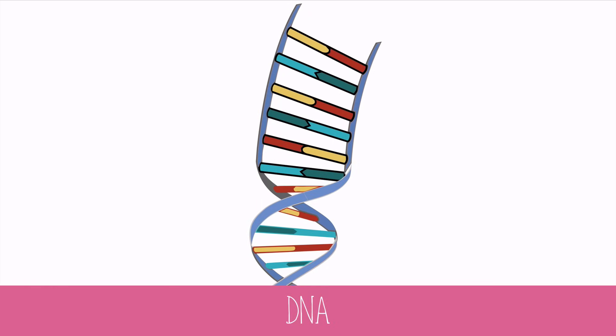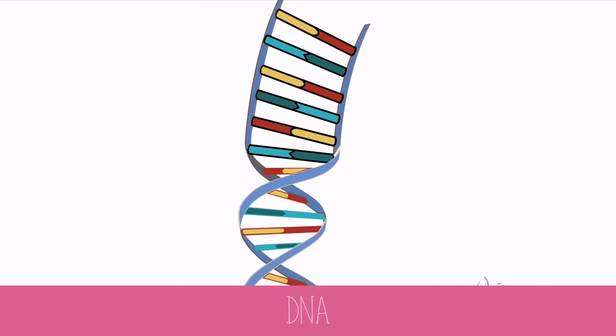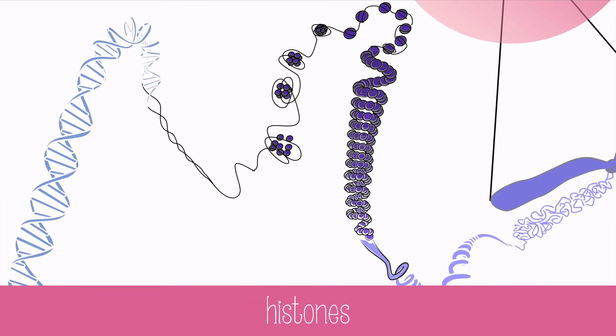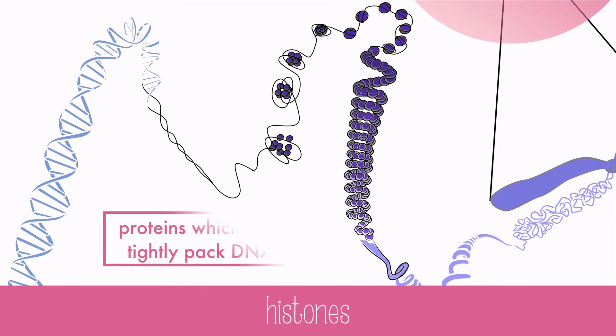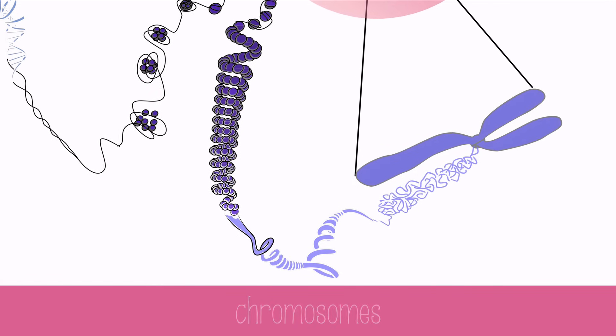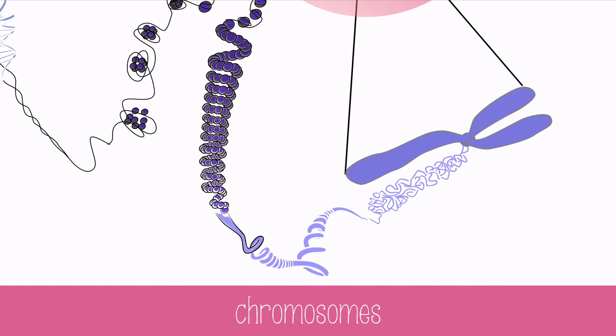DNA needs to be copied before division can occur. And in order to make sure the copies are divided evenly, eukaryotic cells wind their DNA up into compact bundles. The DNA wraps around proteins called histones, which coil up tightly to form very dense, compact chromosomes. The chromosomes exist only just before and during replication.